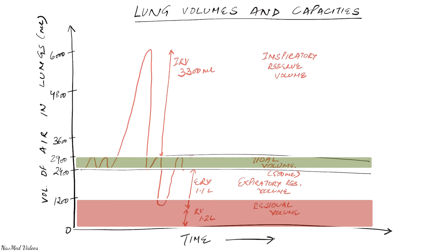To summarize the four volumes: tidal volume is 500 mils — the normal amount of air you breathe in or out at a time. Inspiratory reserve volume is 3,300 milliliters — the extra air you can inspire. Expiratory reserve volume is about 1.1 liters — the extra air you can breathe out. And residual volume is the air always remaining in the lungs after maximum expiration.